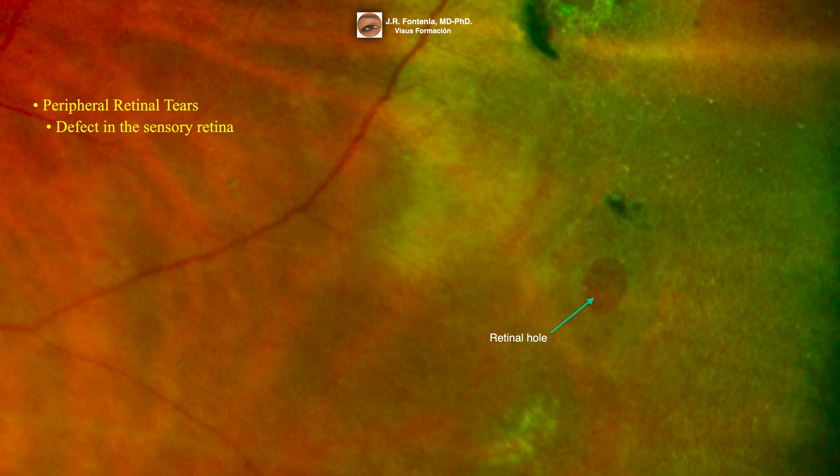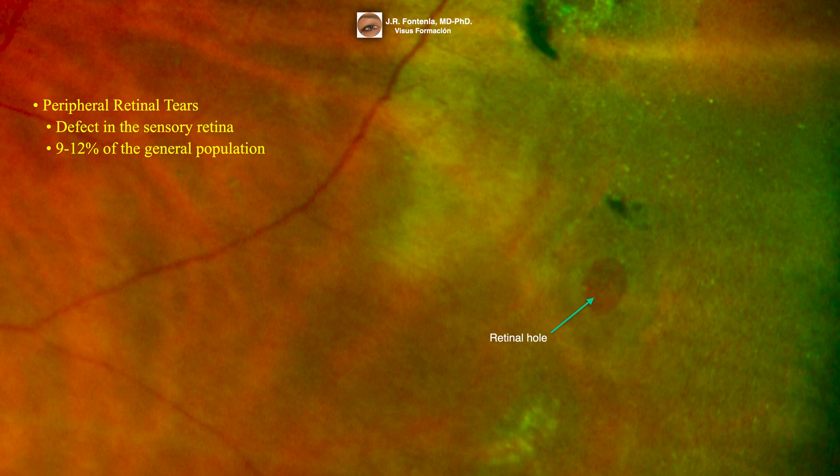Peripheral retinal tears are defined as isolated tears due to a defect in the sensory retina caused by traction of the vitreous after an acute posterior vitreous detachment. Its prevalence is 9-12% of the general population.